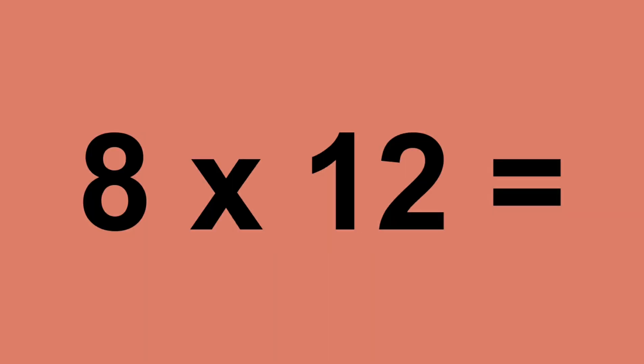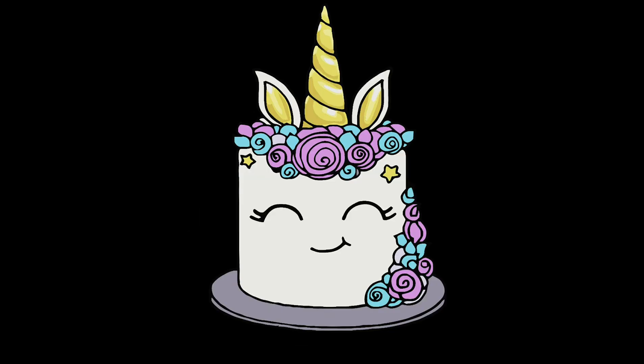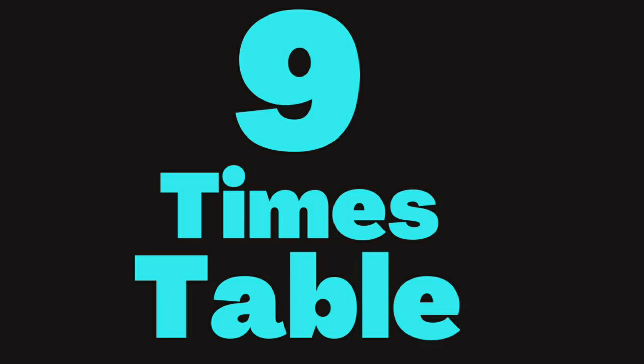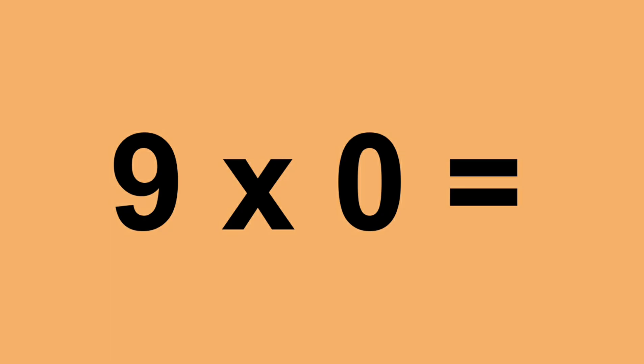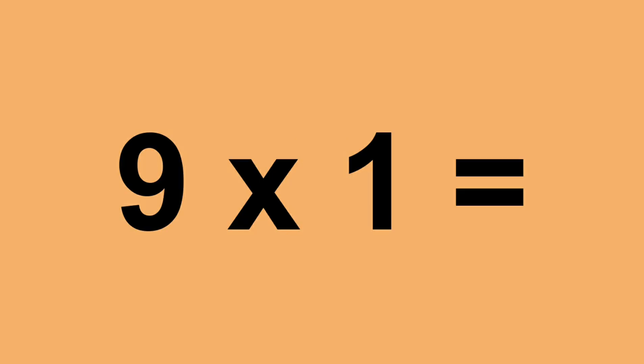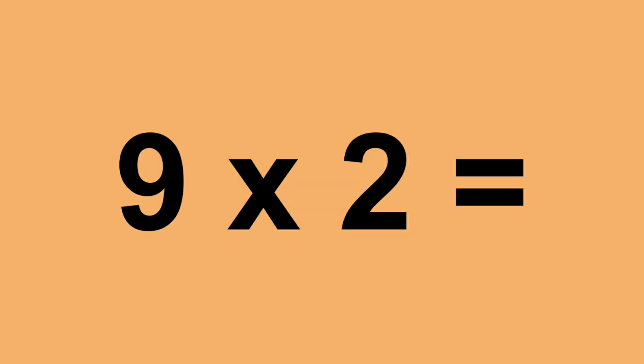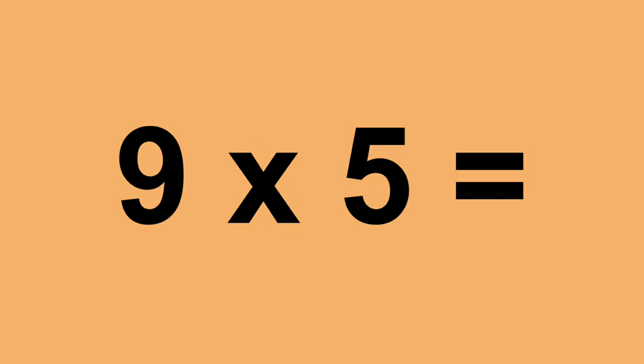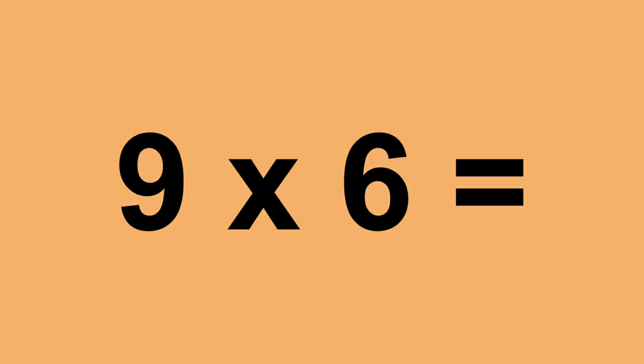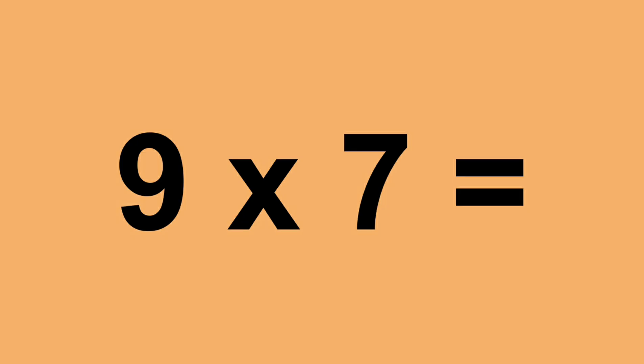Eight times twelve equals ninety-six. Nine times zero equals zero. Nine times one equals nine. Nine times two equals eighteen. Nine times three equals twenty-seven. Nine times four equals thirty-six. Nine times five equals forty-five. Nine times six equals fifty-four. Nine times seven equals sixty-three.